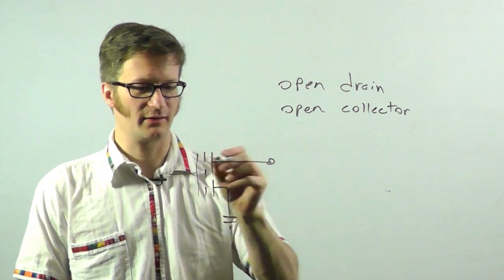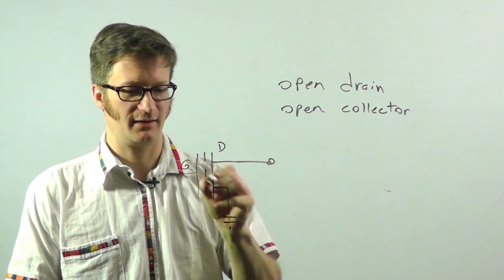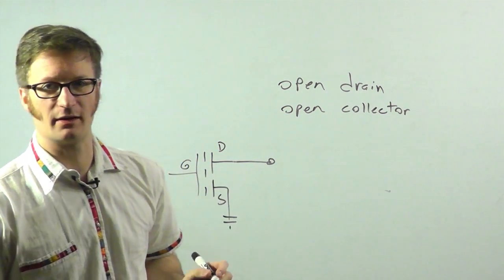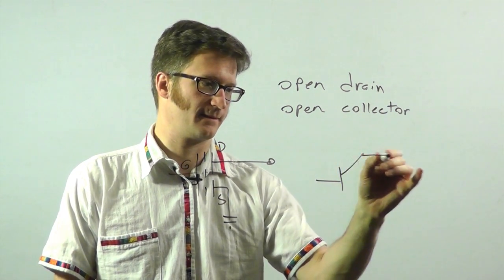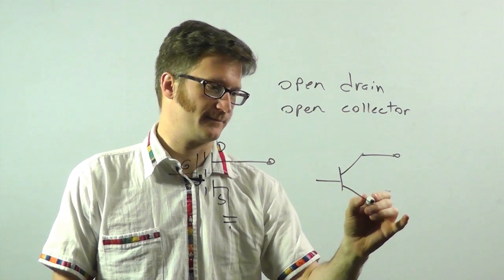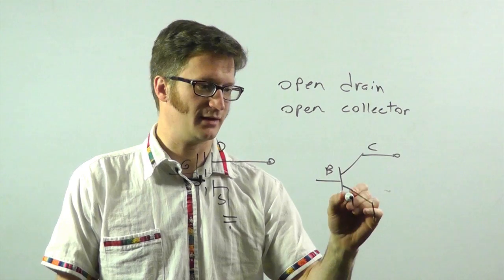Open collector, it's called open drain because this is drain, gate, source on a FET. And on a transistor, it's collector, base, emitter.